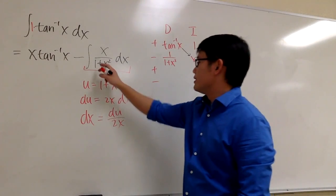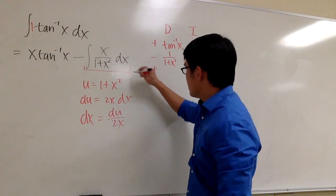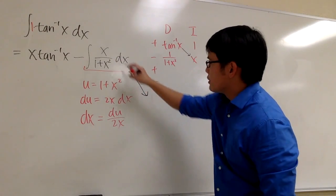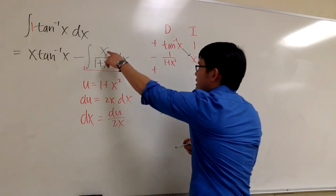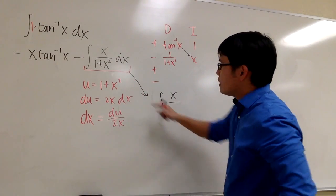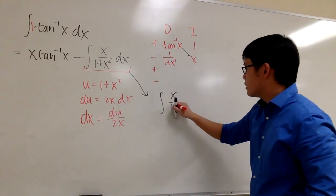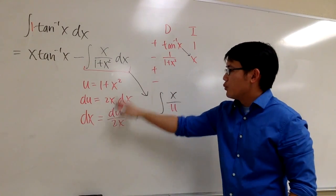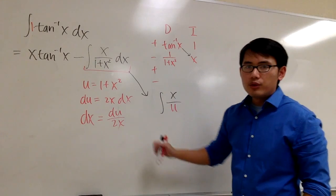And allow me to just kind of do this on the side. This is going to be... This integral is going to be the integral, the x is through the x, over the denominator is u. And dx, we found it to be du over 2x.